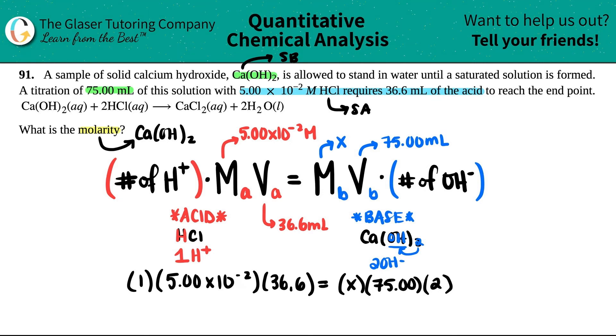So we have 1 for the 1 H⁺ times 5.00 times 10⁻² times 36.6 equals x times 75 times 2. Okay, so let's do some algebra here. 5 times 10⁻² times 36.6, I get 1.83 equals 150. 75 times 2 is 150, and that's an x. So you want to get x by itself.